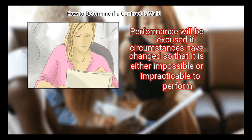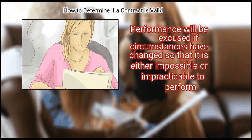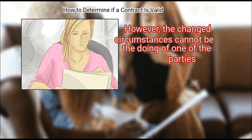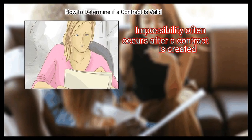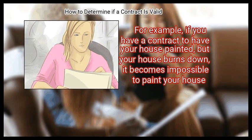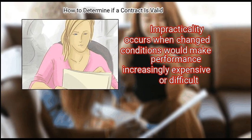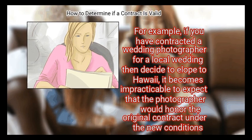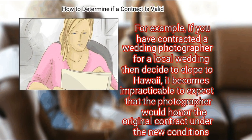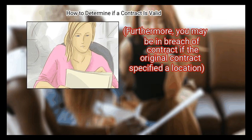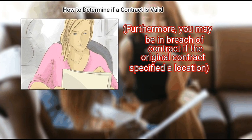Step 2: Check if the contract is impossible or impracticable to perform. Performance will be excused if circumstances have changed so that it is either impossible or impracticable to perform; however, the changed circumstances cannot be the doing of one of the parties. Impossibility often occurs after a contract is created — for example, if you have a contract to have your house painted but your house burns down, it becomes impossible to paint your house. Impracticality occurs when changed conditions would make performance increasingly expensive or difficult — for example, if you contracted a wedding photographer for a local wedding and then decide to elope to Hawaii, it becomes impracticable to expect that the photographer would honor the original contract. Furthermore, you may be in breach of contract if the original contract specified a location.